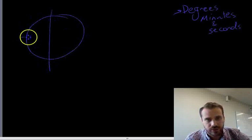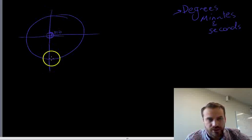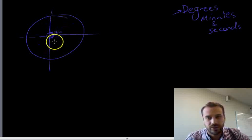In a circle, there are 360 degrees. There's 90 degrees in a right angle, 180 degrees in a straight line. Okay, so we know that there's 360 degrees in a circle.